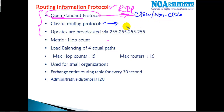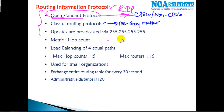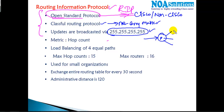RIP is a classless protocol, which means it is not going to carry the subnet mask information along with updates — as we discussed in the previous session. When it sends any update, it simply sends it as a broadcast out of all the interfaces, and an update received on one interface is sent out of all the remaining interfaces.